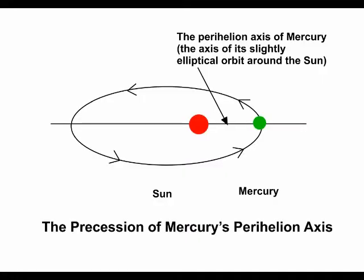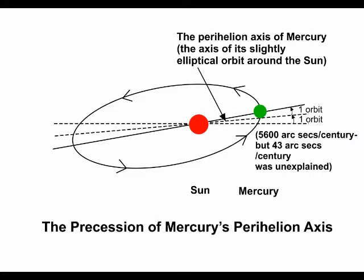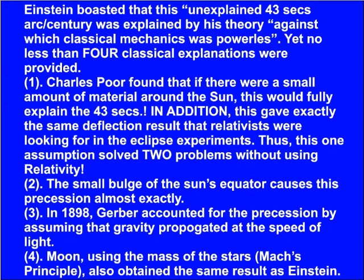Regarding the precession of Mercury's perihelion: Mercury orbits the Sun in an elliptical orbit, and the long axis slowly rotates with each orbit, at 5,600 arc seconds per century. Although astronomers could account for most of this rotation, there was a remaining 43 arc seconds they could not account for. Einstein boasted that this unexplained 43 seconds of arc per century was explained by his theory, against which classical mechanics was powerless. Yet no less than four classical explanations were provided. Charles Poor found that if there were a small amount of material around the Sun, this would fully explain the 43 seconds, and gave exactly the same deflection results that relativists were looking for in the eclipse experiments — thus one assumption solved two problems without using relativity.